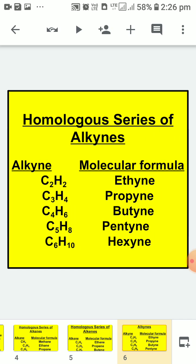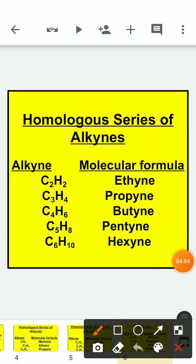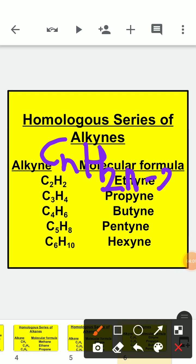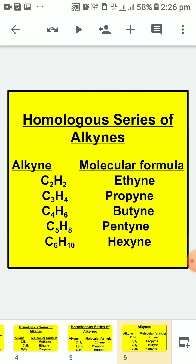The homologous series of alkynes uses the formula CnH2n-2. Again we do not use N equals 1, as a triple bond requires at least 2 carbon atoms. Starting with N equals 2, the members are: C2H2, C3H4, C4H6, C5H8, and C6H10. In this way you can find different members of any homologous series.